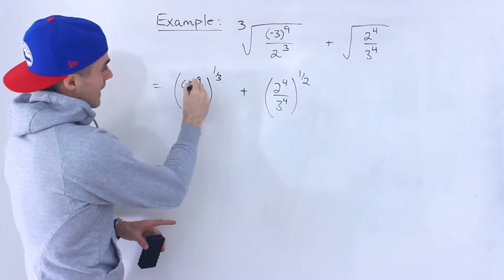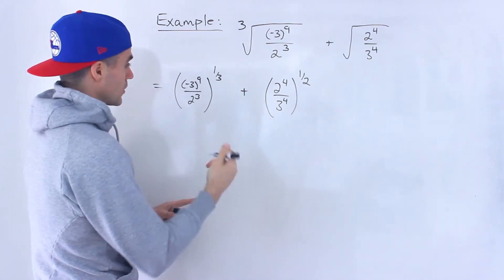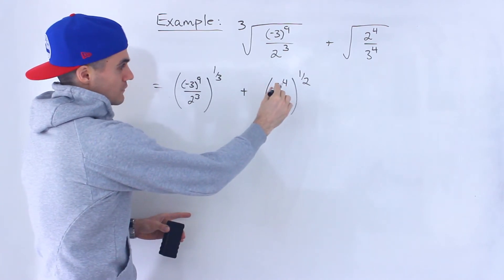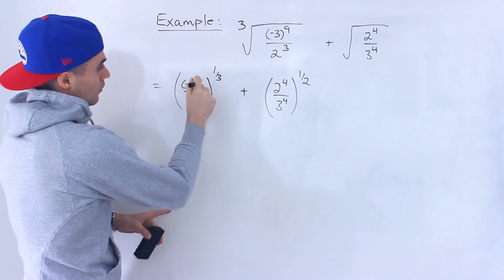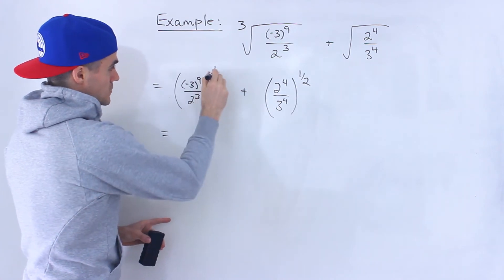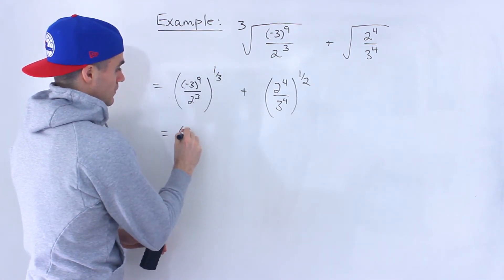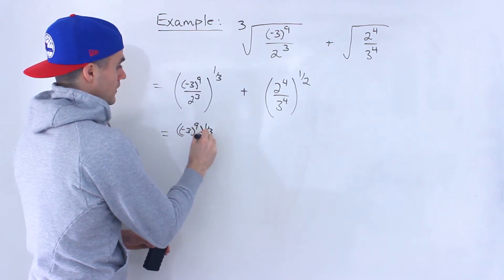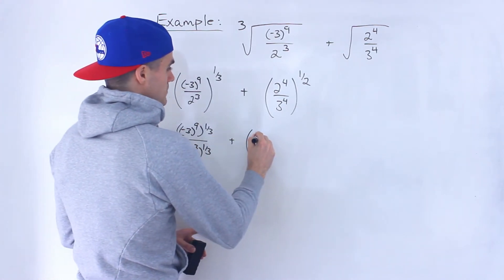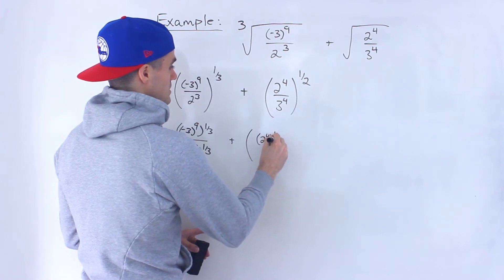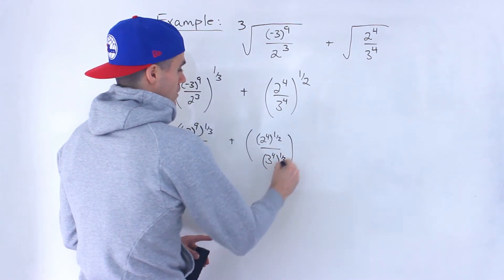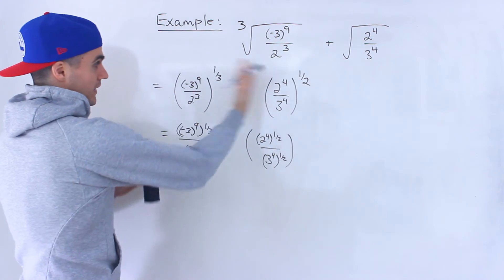Instead of getting the actual numbers here, because notice negative 3 to the power of 9 is going to be a very large number - 2 to the power of 3 is just 8, so that's not bad. But in order to not work with as big numbers in the brackets yet, I would take this 1 over 3 and distribute it to the numerator and the denominator. A lot of times when I get questions like this, I first try to simplify the brackets before bringing in any outside exponents.